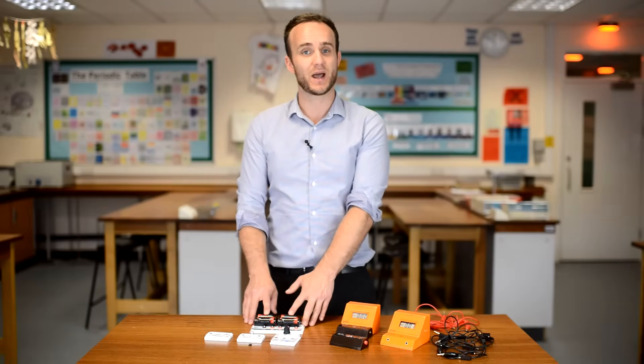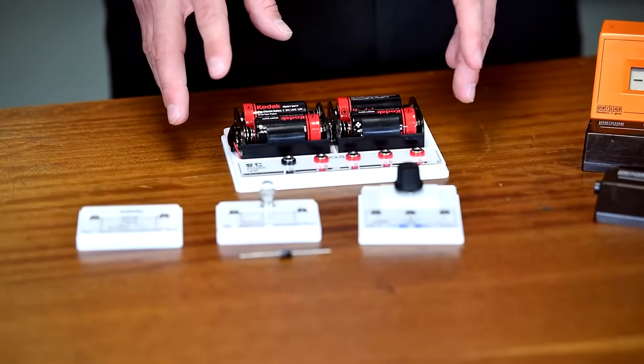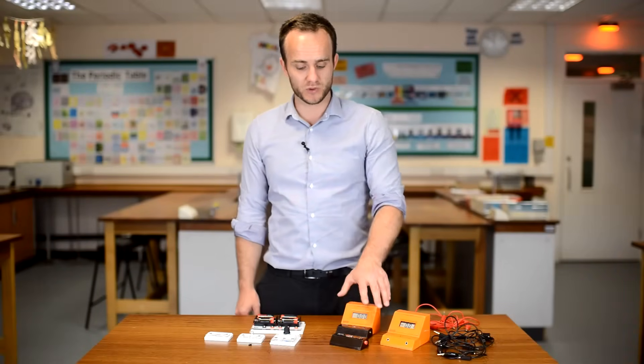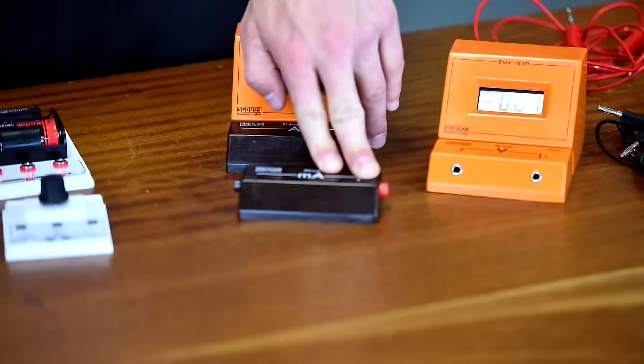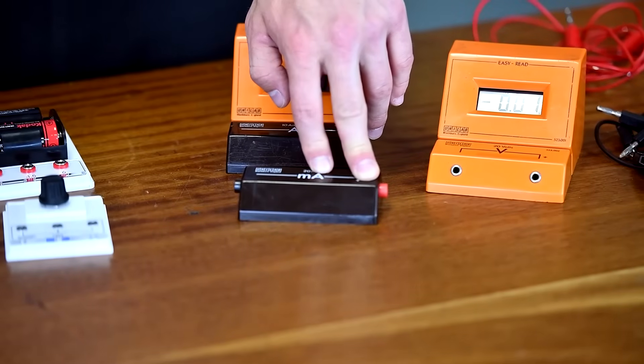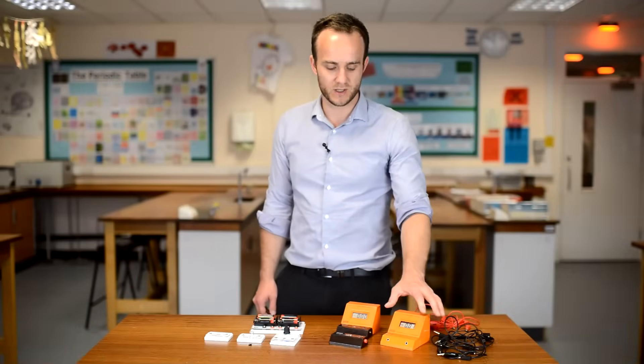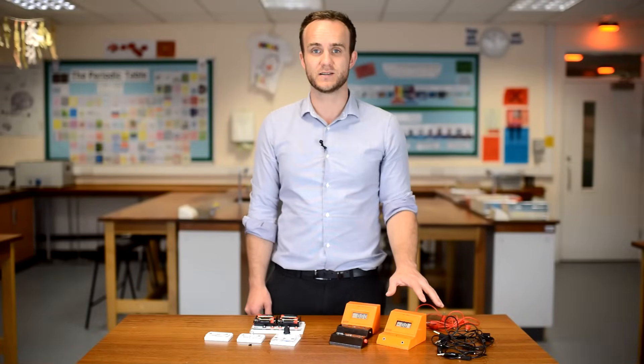We also have a battery or a power supply, you can use that too, that can supply up to about 5 volts. We have an ammeter, and also I have my milliamp shunt here as well, which means that I can turn it into a more sensitive ammeter, which we're going to need for the diode. I have my voltmeter as well and lots of leads.